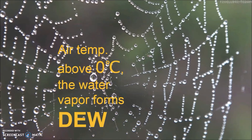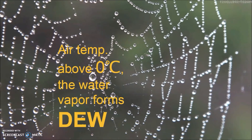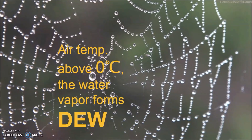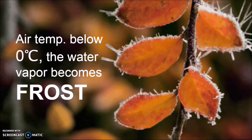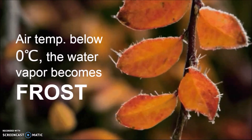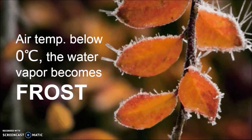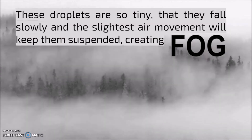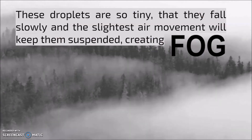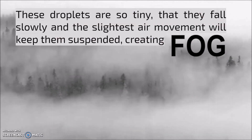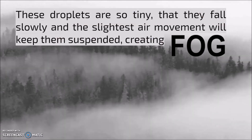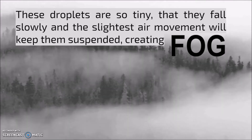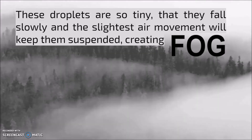When the air temperature is above 0 degrees Celsius, water vapor forms dew. If the air temperature is below 0 degrees, the water vapor becomes frost. These droplets of water in the air around the condensation nuclei are so tiny that they fall slowly, and the slightest air movement will keep them suspended. When this happens, it creates fog.